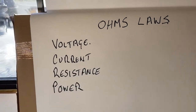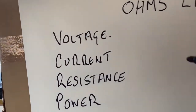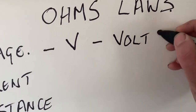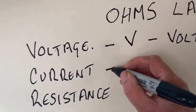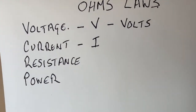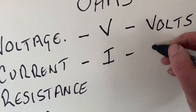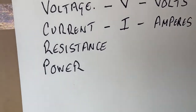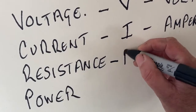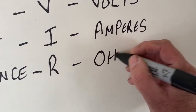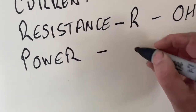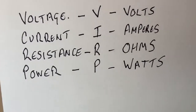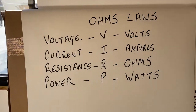Voltage: symbol V, measured in volts - nice and easy to start. Current: symbol I - slightly confusing, but C was already taken by coulombs - measured in amperes, or amps for short. Resistance: symbol R, its unit is ohms. Power: symbol P, measured in watts. Those are the four fundamental things at play.